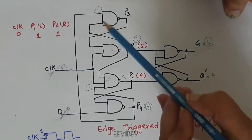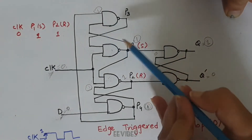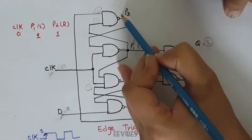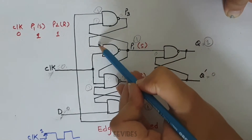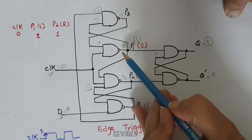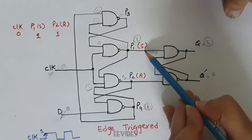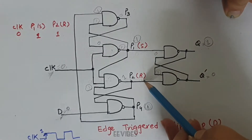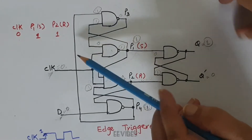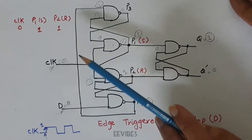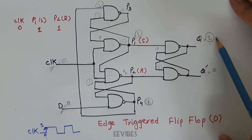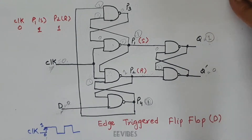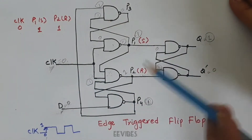Since this is equal to 1 and it is also equal to 1, the inputs 1,1 will produce output equal to 0. This 0 is fed back, so 0,0 produces output equal to 1, and hence S is equal to 1 and R is also equal to 1. Therefore, the D input does not affect the D latch as long as the clock signal is disabled.